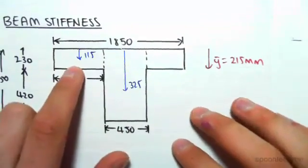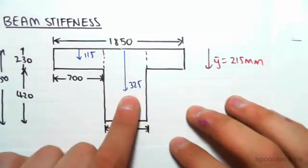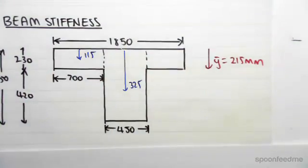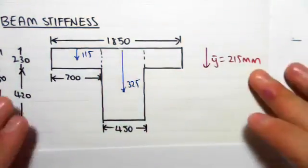By just going 230 divide 2 gives us 115, and 650 on 2 gives us 325. So that is the distance from the top to the centroid of each block. The first thing we need to do is find the y bar.